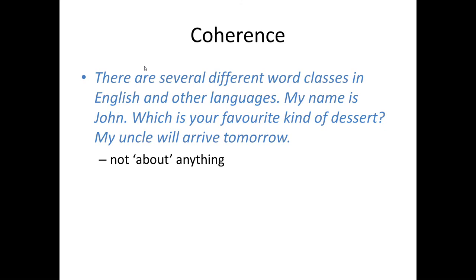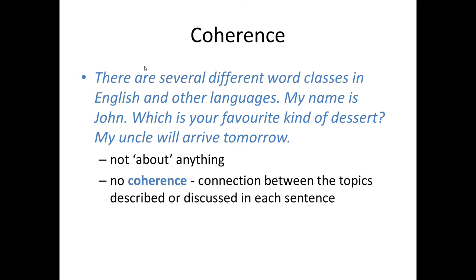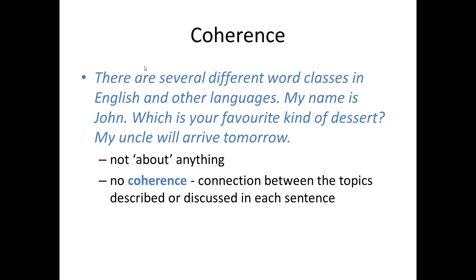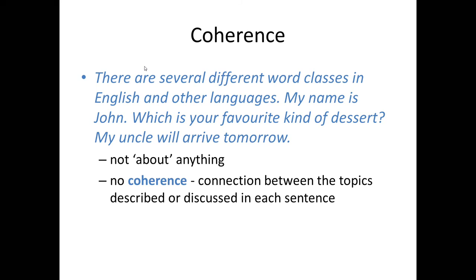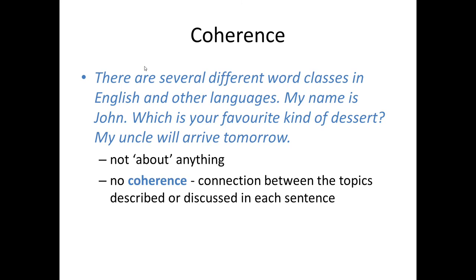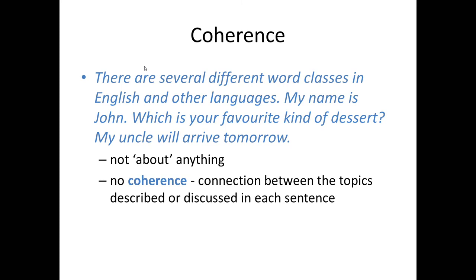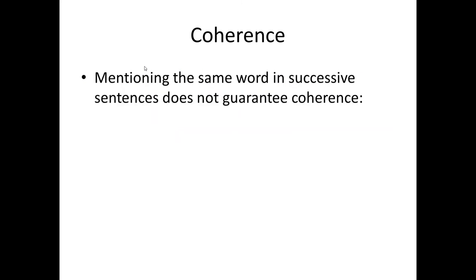A text as a whole should be about something. In fact, the term 'aboutness' is sometimes used. We say that a text needs to have coherence. There needs to be a connection between the topics that are described or discussed in each sentence.